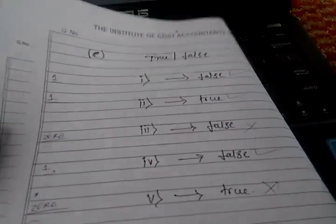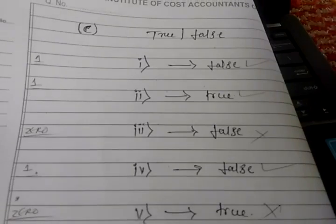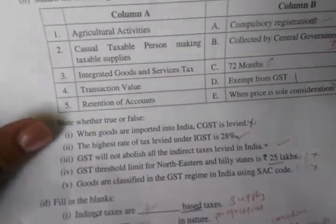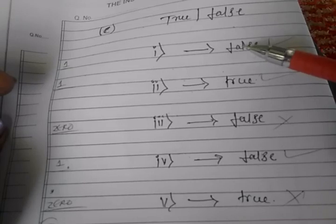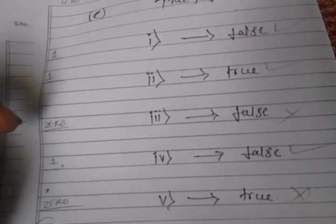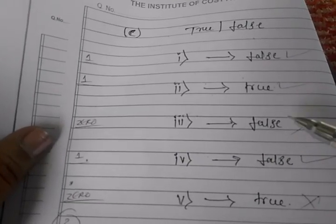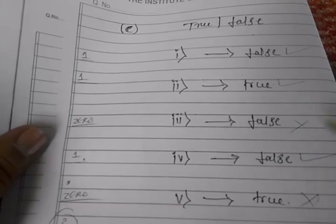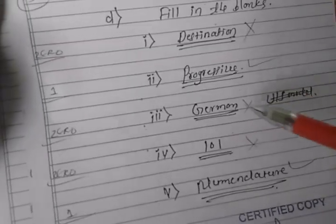For true and false questions, you just write: first question — True, second — False, third — True, and so on. Don't sit and write every sentence. Don't write 'right' or 'wrong' — it will be a waste of time. See, they checked: question one is True, this is False — wrong answer, this is True — correct, this is wrong. Three correct, they given three marks. For fill in the blanks, two correct — they given two marks.